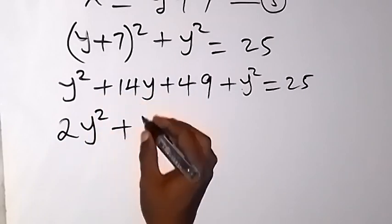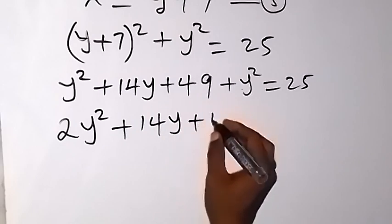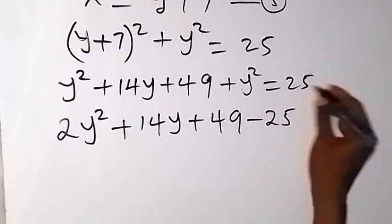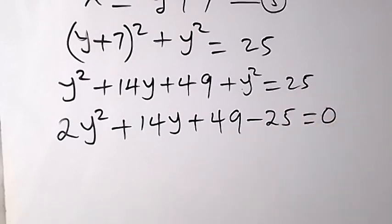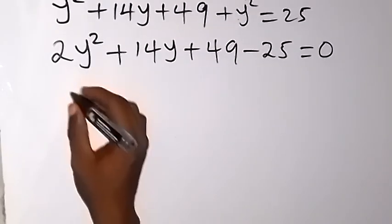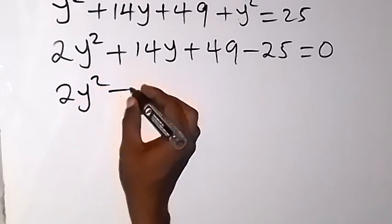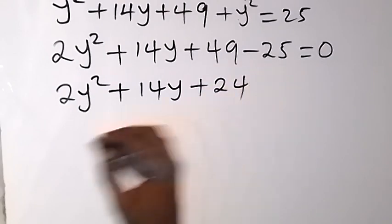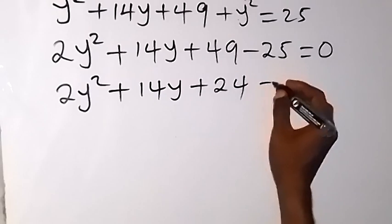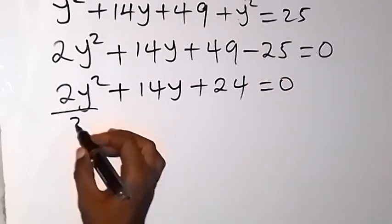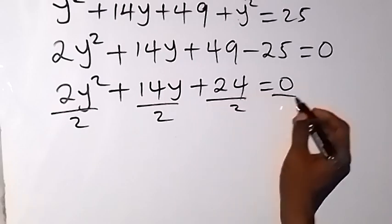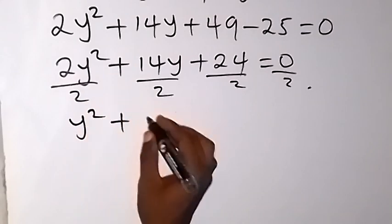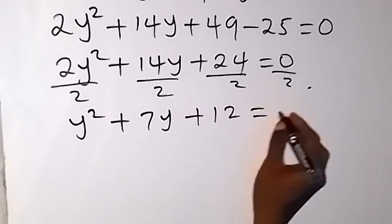Then we have plus 14y plus 49. Let's take 25 to this side, it becomes minus 25. We have 0 left on the right side. When we write this again, we have 2y squared plus 14y. That gives us plus 24, since 49 minus 25 is 24, equals 0. From here, we can divide through by 2.